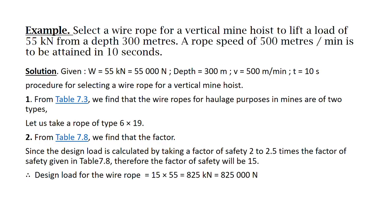Now let us see an example. A wire rope for a vertical mine hoist is to lift a load of 55 kilo Newton from a depth of 300 meters. The rope speed is 500 meters per minute and T is 10 seconds. So what is given: the weight to be lifted is 55 kilo Newton, depth is 300 meters, velocity is 500 meters per minute, and T is 10 seconds.